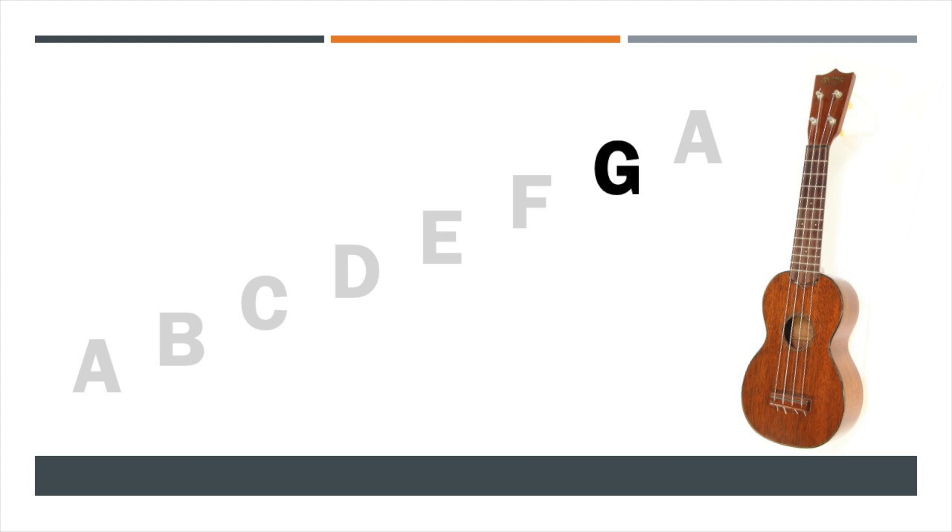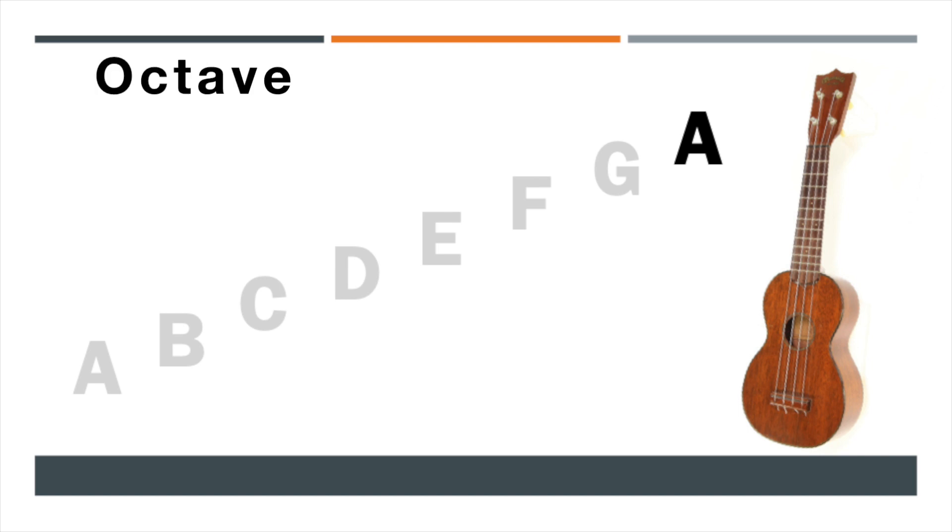Once we've got to G, the next note would be another A, but this time it would be what is known as an octave higher than the first A we started on. So the A we started on and the A we finished on an octave higher.